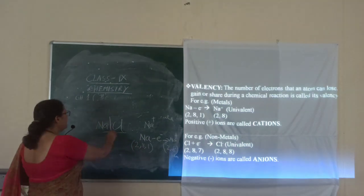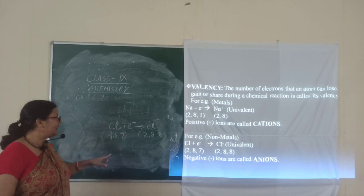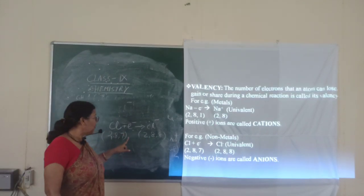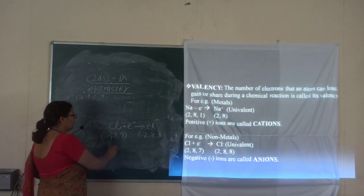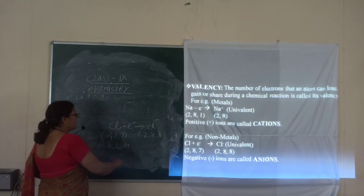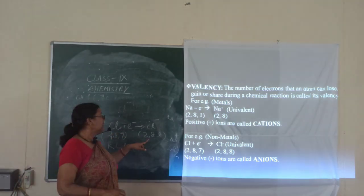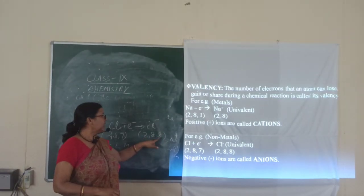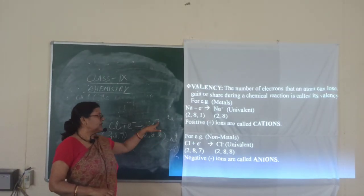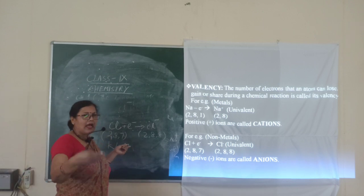Chlorine is receiving one electron to complete its last orbit. The chlorine atom has K shell with 2 electrons, L shell with 8 electrons, and M shell with 7 electrons. So when it receives one electron, it satisfies its octet: 2, 8, 8, and becomes Cl minus. Cl minus means these type of ions are called anions.